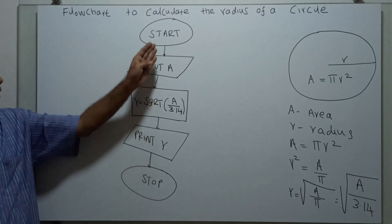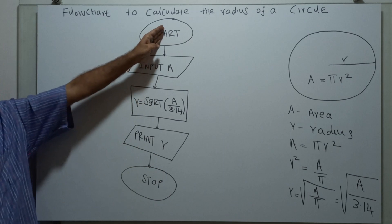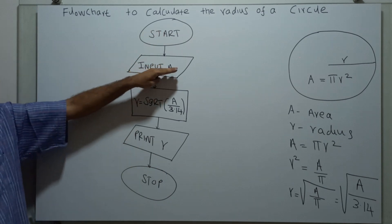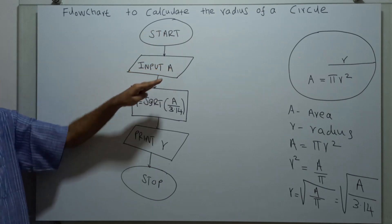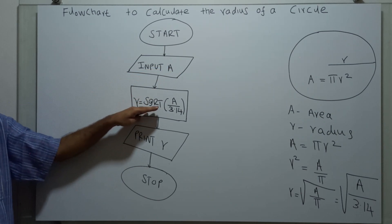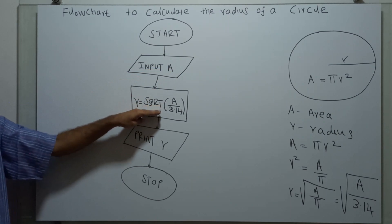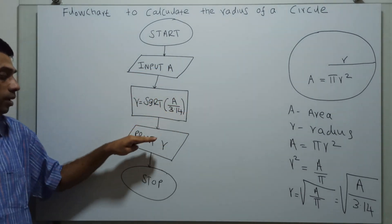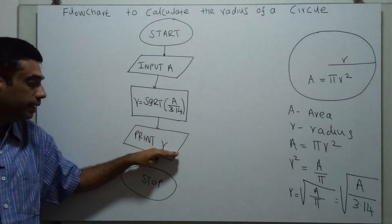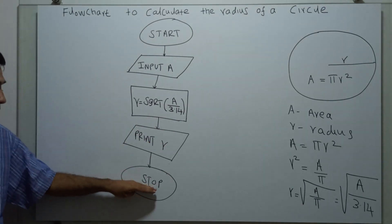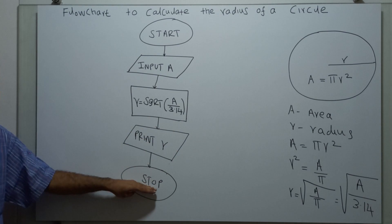So, the logical start of the flow chart: I am obtaining area as an input, then radius equal to square root of area divided by 3.14, then printing the radius. This is the logical end of the flow chart.